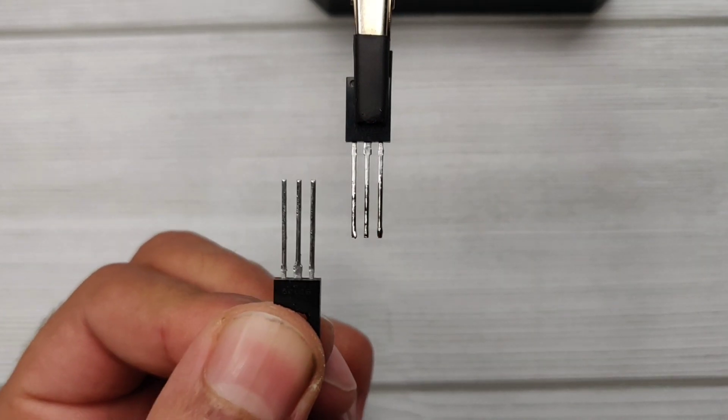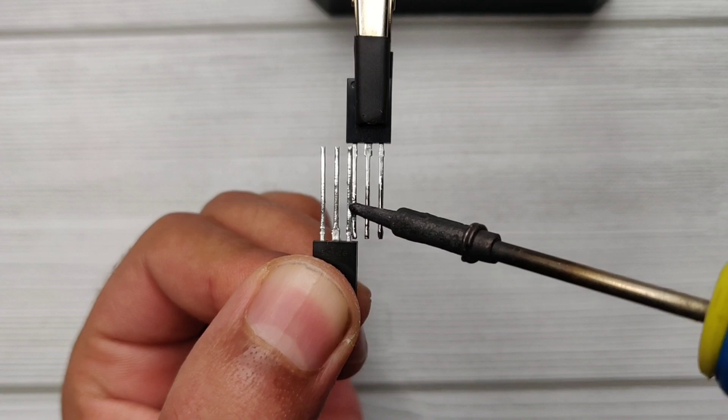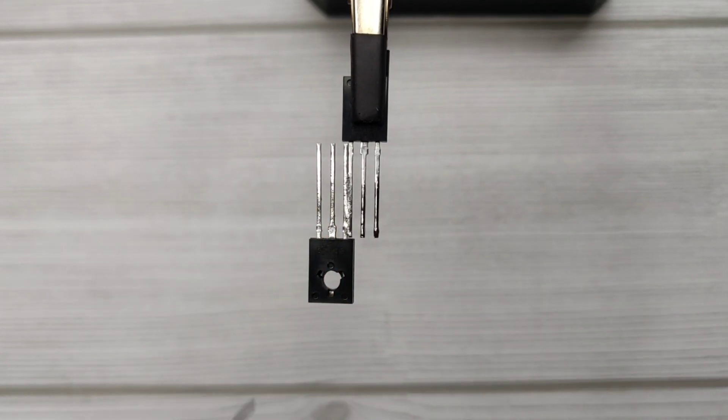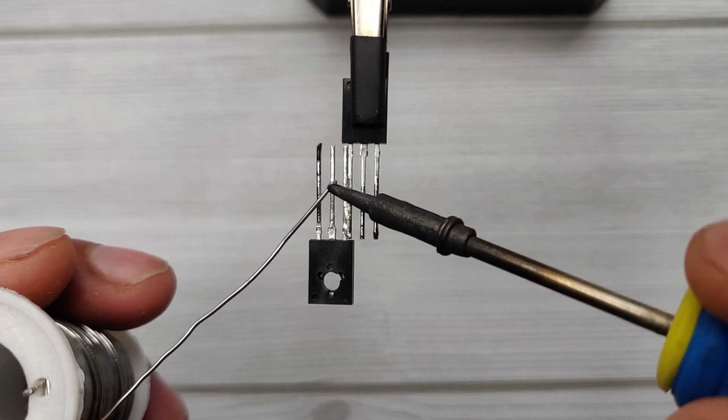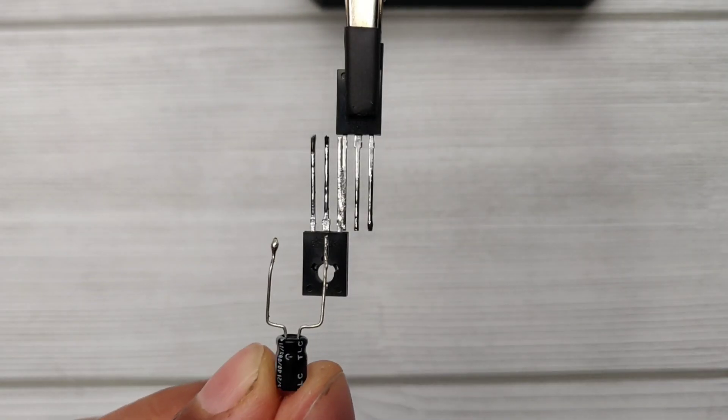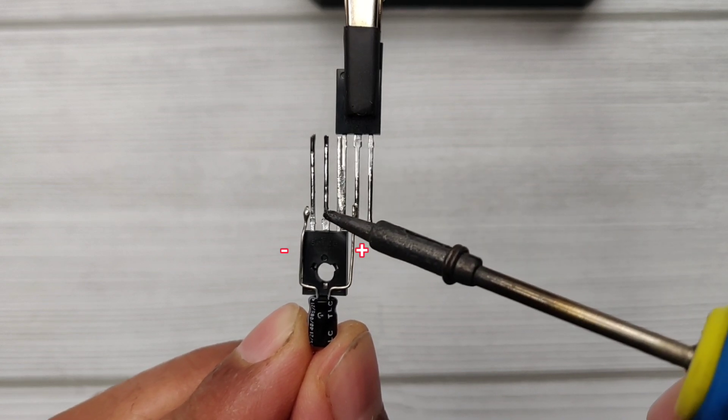Solder pin 1 with pin 1 of another transistor. Take a 10UF capacitor, solder capacitor positive with collector and negative with base of another transistor.